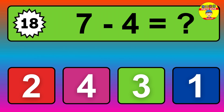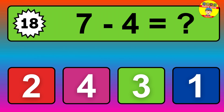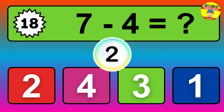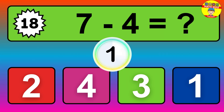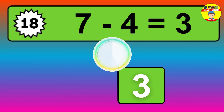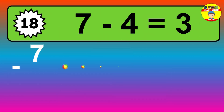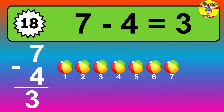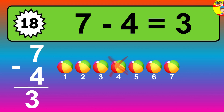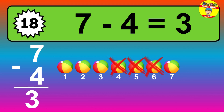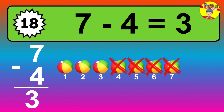Question eighteen: seven minus four equals what? So the answer is seven minus four is three. Let's count it: one, two, three.